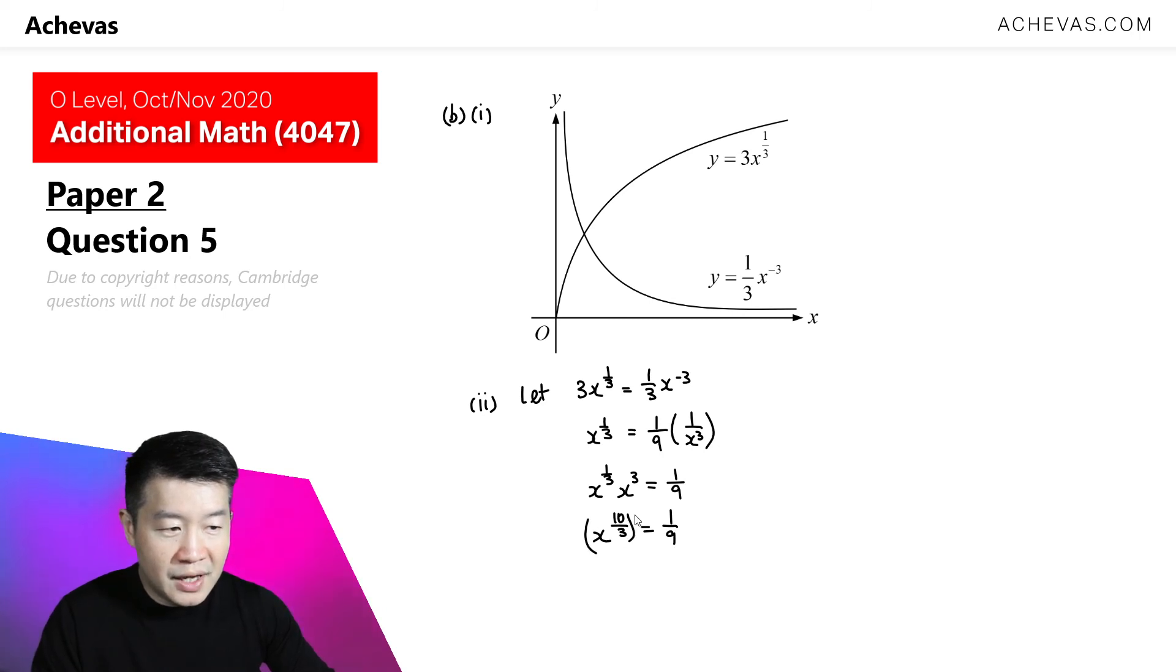And if I were to take this and cube it, so on the left-hand side here, we will have x to the power of 10. And on the right-hand side, it is 1 over 729, which is what the question wants us to show.